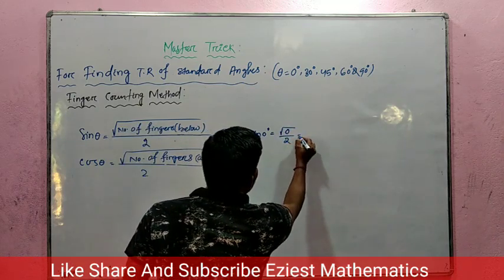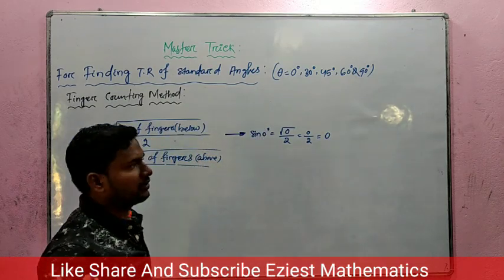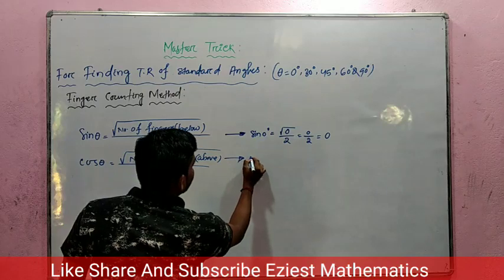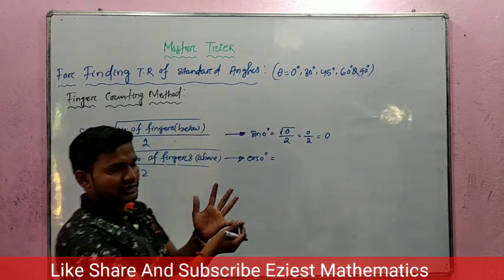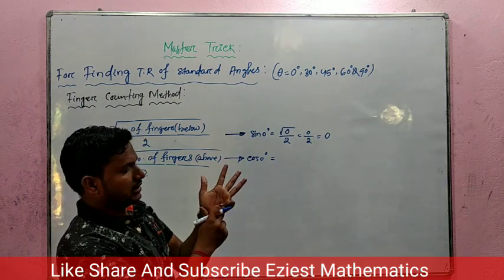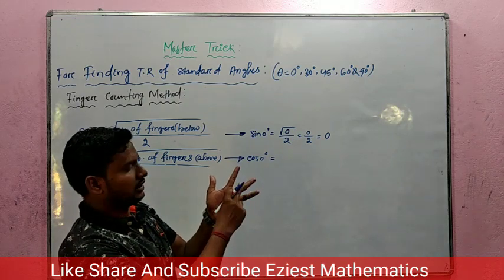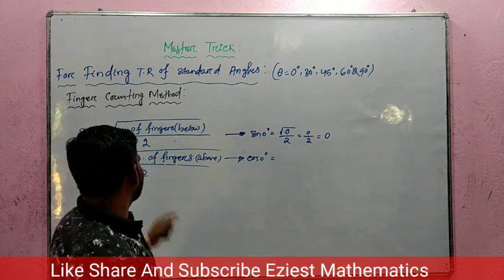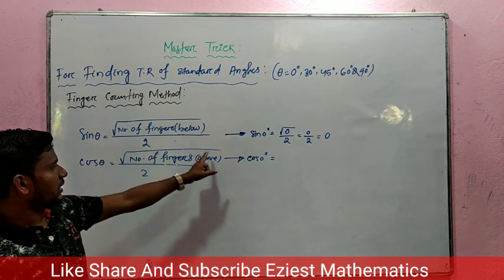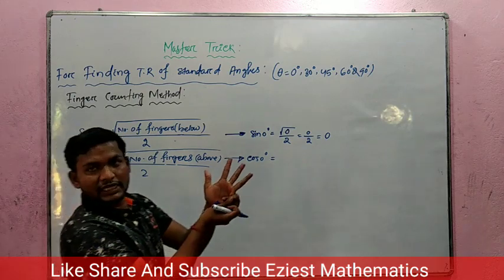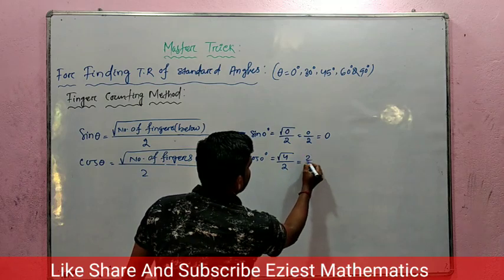So 0 by 2 is equal to 0. The value of sin 0 is 0. Now to find the value of cos 0 degree: for cos, the rule is the number of fingers above the closed finger. For 0 degree, close that finger. The fingers above are 1, 2, 3, 4 — so 4 fingers above. So cos 0 equals square root of 4 by 2, which is 2 by 2, which equals 1.